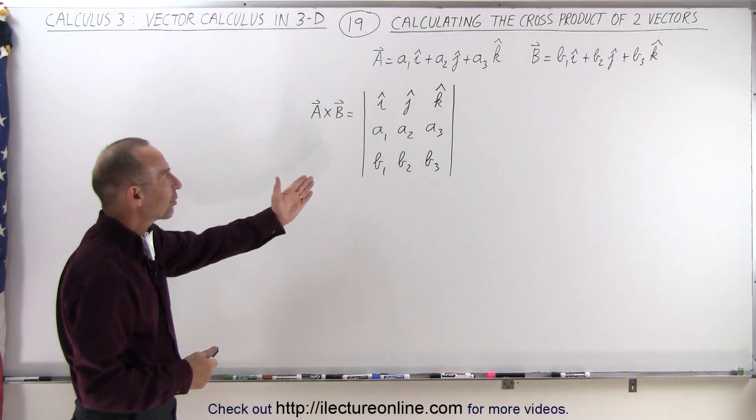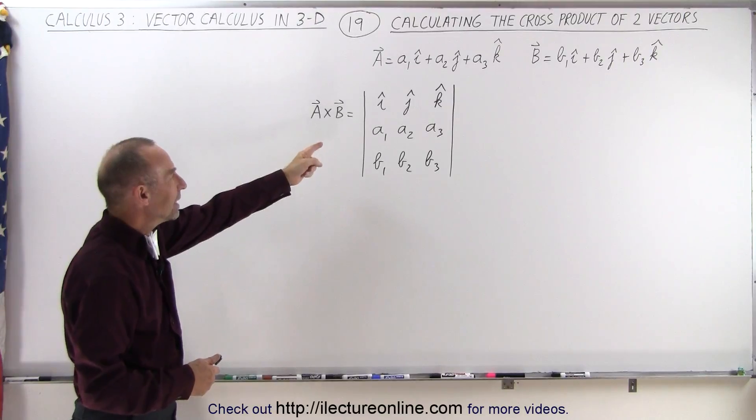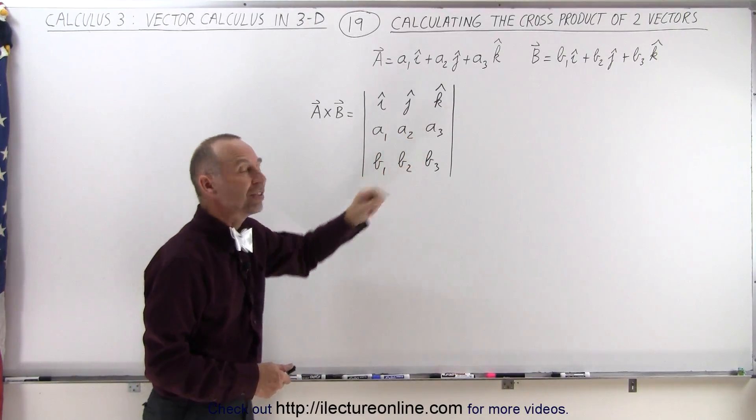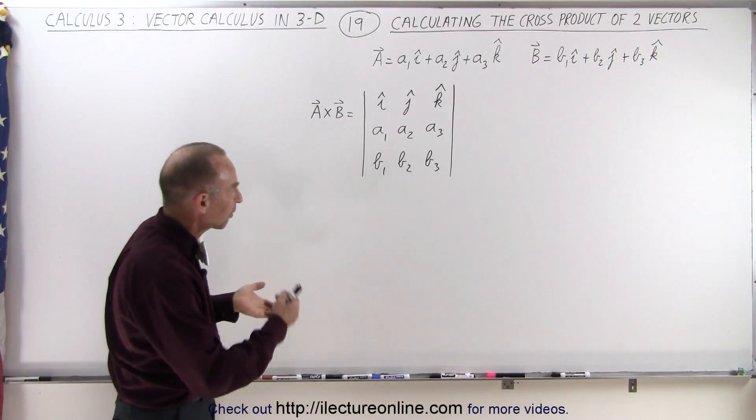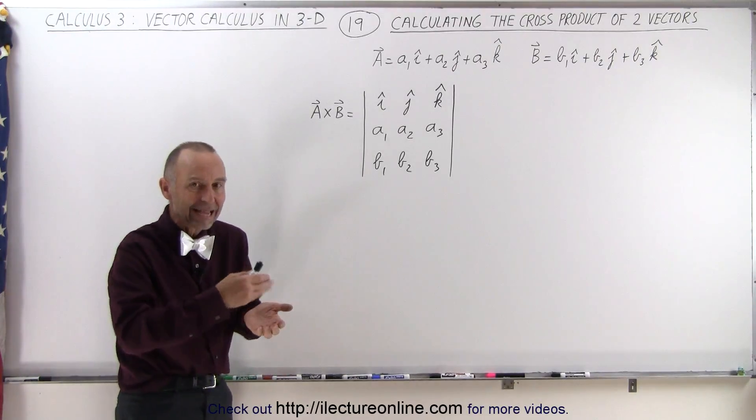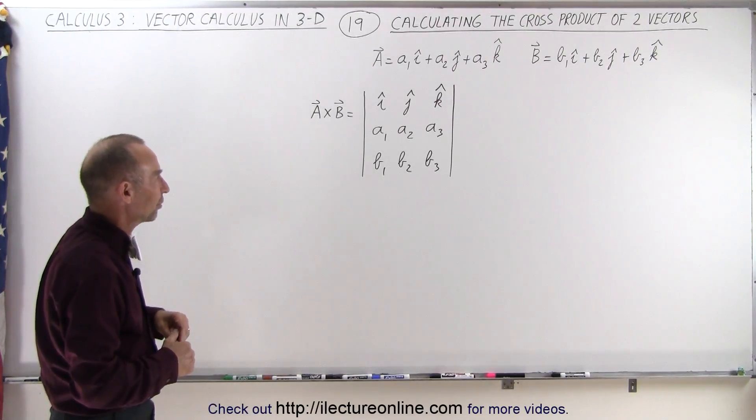It's the matrix IJK, the X, Y and Z components of A and the X, Y and Z components of B. And we have the subscripts 1, 2 and 3 to represent the X, Y and Z components of the vectors.